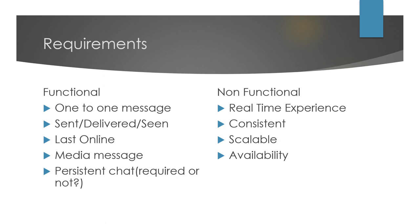The basic requirement is that two users should be able to send messages to each other, so our system should support one-to-one messaging. We should also support message status notifications — when you send a message you get a notification that it has been sent, delivered, and when user 2 sees the message, you get a double blue tick mark as in WhatsApp.